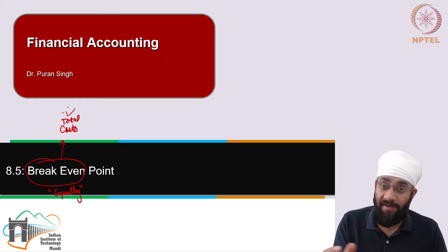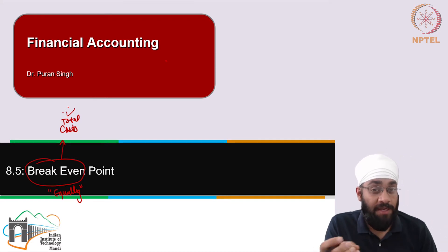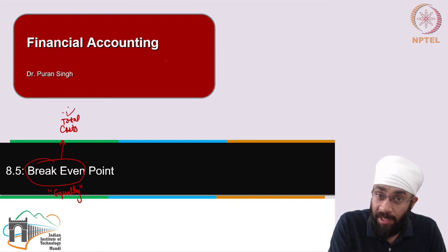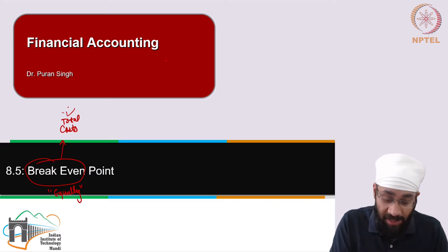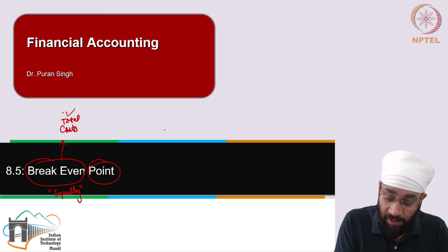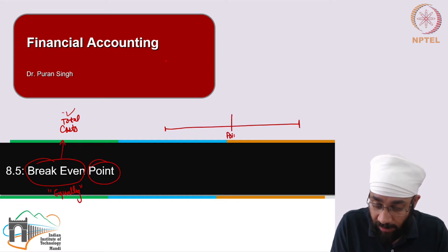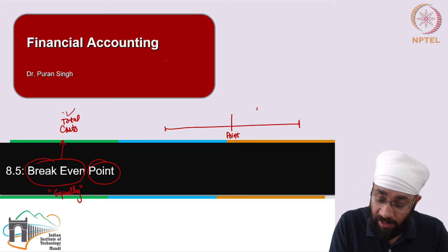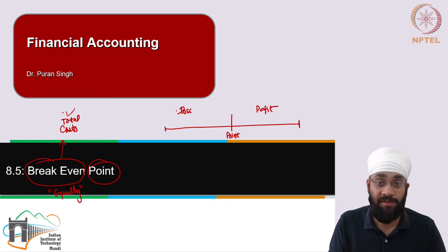What is ahead after this barrier? After this barrier, you start making profit. So does it mean you are not making profits before this point? Yes. So if this is the point, then after this point is your profit and before this point is the loss.